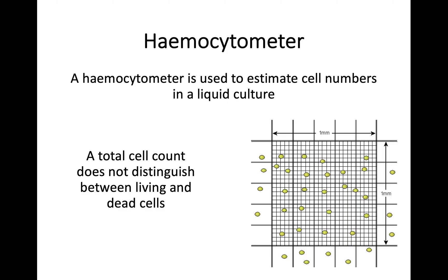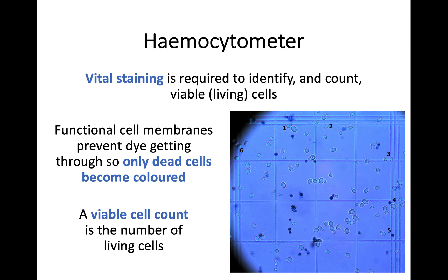To count only living cells, we use vital staining. Any living, viable cell will have a functional cell membrane, which will prevent the dye from coming through. You can use that to differentiate between dead cells and living or viable cells, in order to get a viable cell count. You can see on the hemocytometer image on the right the different colours between these cells.